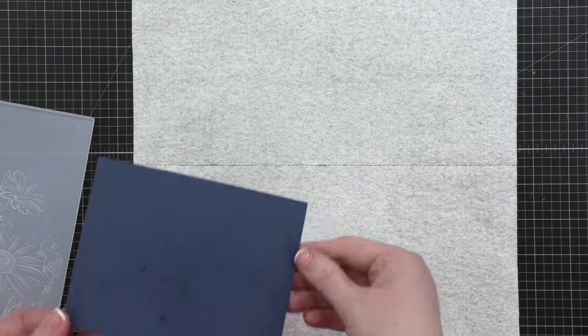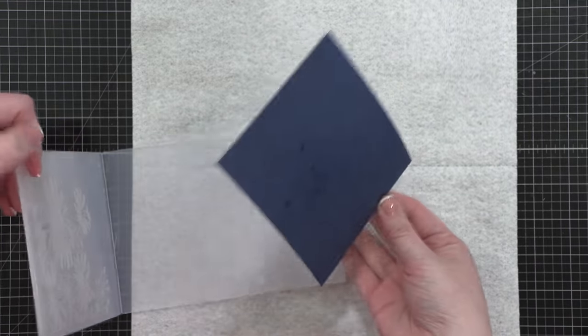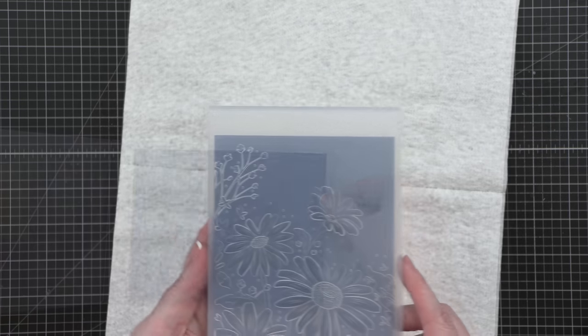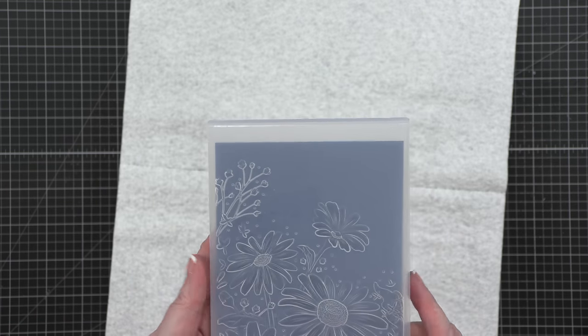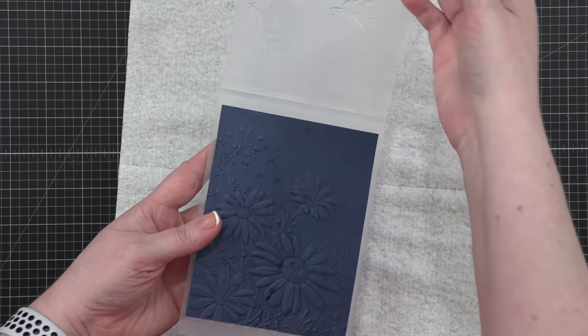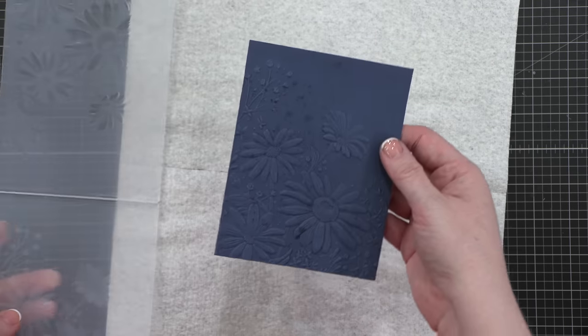So I'm using some soft navy cardstock from Simon. I've lightly sprayed it with water on both sides of the cardstock, and then I'm running it through my die cutting machine. This embossing folder is stunning, so beautiful.